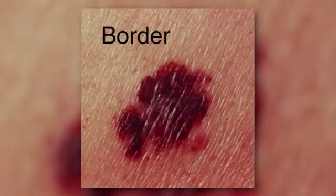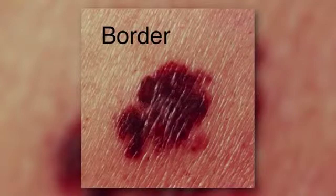B is border — irregular borders, so jagged edges like this photo has.